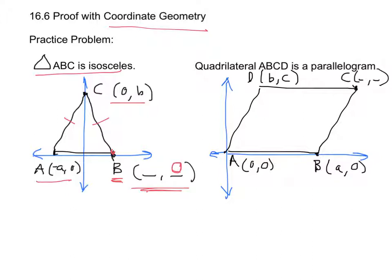Since the distances are going to be equal, that means these distances are equal as well. So since this side is at negative a, the corresponding coordinate is going to be a, giving point B coordinates of (a, 0).